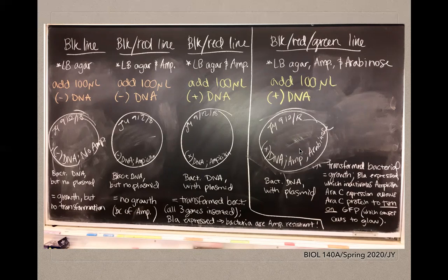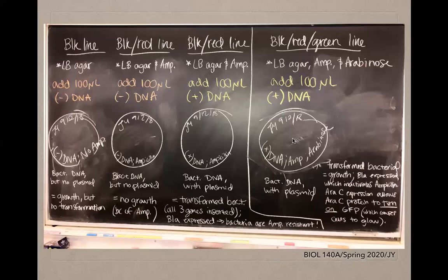The third and fourth plates are specific to the transformed bacterial sample, and this will only work if the experimental protocol was followed meticulously and transformation was successful. If you streak the transformed sample onto the third plate, which contains agar and ampicillin, beta-lactamase would be expressed, causing the bacterial cells to become ampicillin-resistant, resulting in bacterial growth on this plate. On the fourth plate, you would also streak the transformed sample and expect growth due to beta-lactamase expression allowing the E. coli cells to grow in the presence of ampicillin.